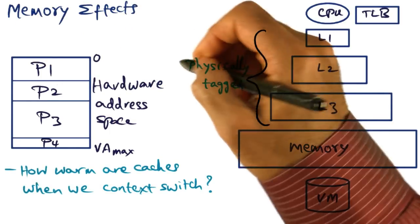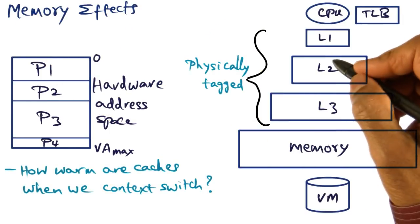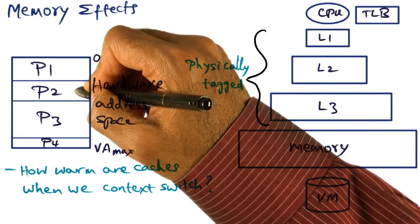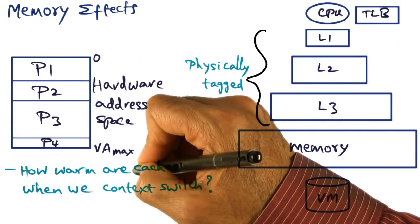What we mean by memory effects is when we context switch between protection domains, how warm are the caches?